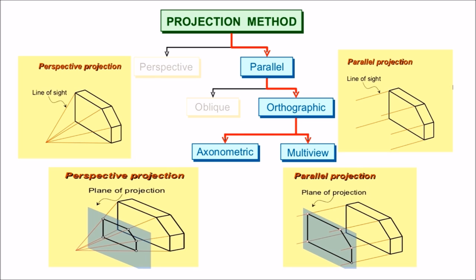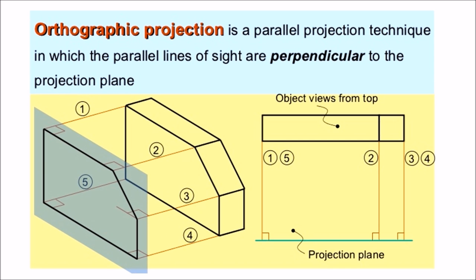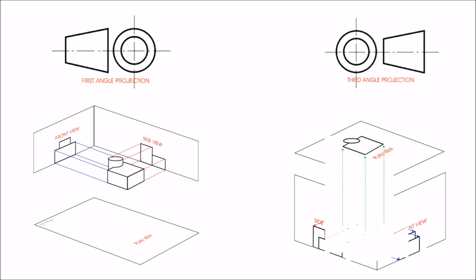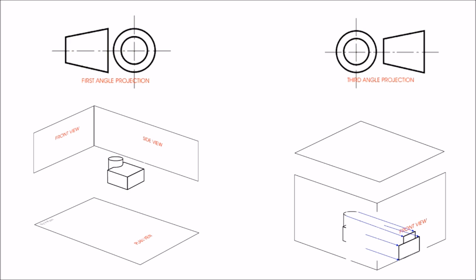Orthographic projection is further divided into axonometric and multi-view projection. It is a parallel projection technique in which parallel lines of sight are perpendicular to the projection plane. As we can see in the image, the object is placed over the paper and the plan view is drawn over it. The first one is the first angle projection and third angle projection. In first angle projection, the plan view is generally below the object, side and front views on the left and right hand side. In third angle projection, the plan view is over the object. The symbols of these projections are the concentric circles and the object on the left whereas in third angle projection, the object is on the right.